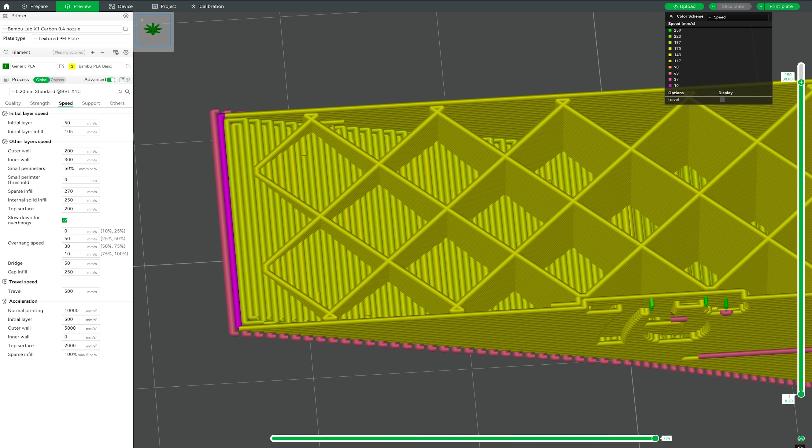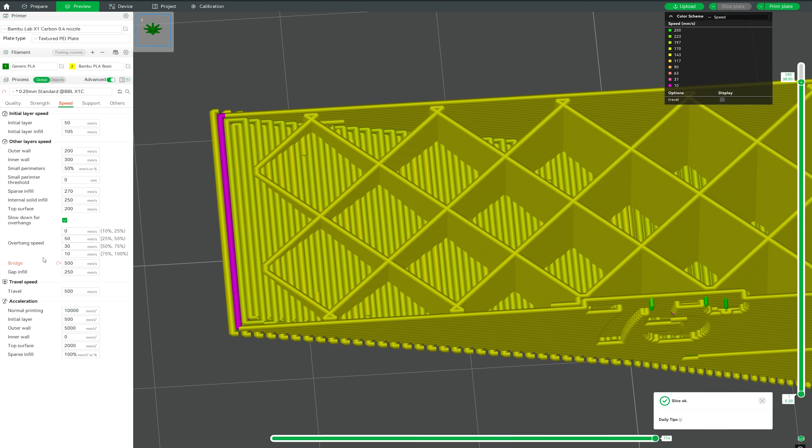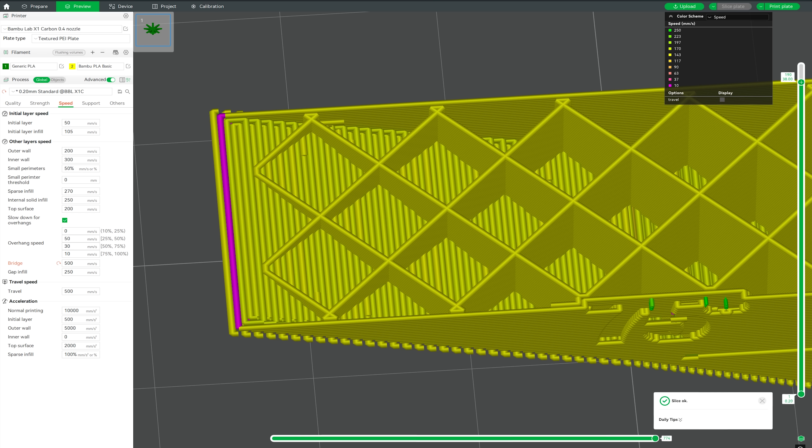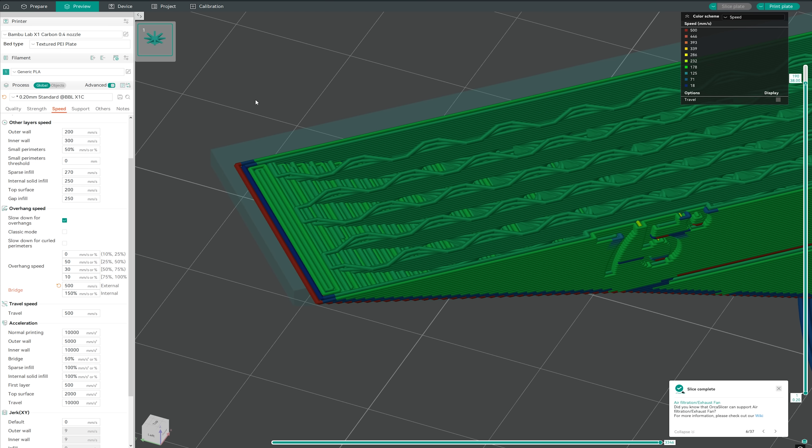Well, we can figure this out by going into bridge. And let's just change this to 500. Let's make the bridging speed 500 millimeters a second. Reslice it. And what do you know? It is actually treating the outside overhang perimeter like a bridge. And we can see the exact same thing happening in Orca Slicer as well. So even though it shows the line type as an overhang, it's treating it as far as the speed goes for slicing it. It's treating it as a bridge, which is incorrect.